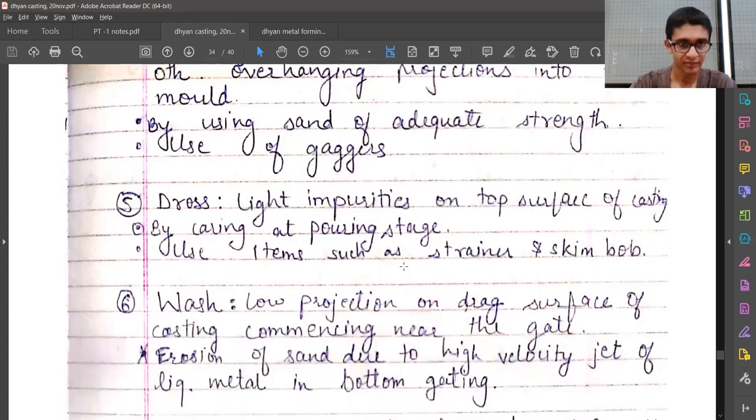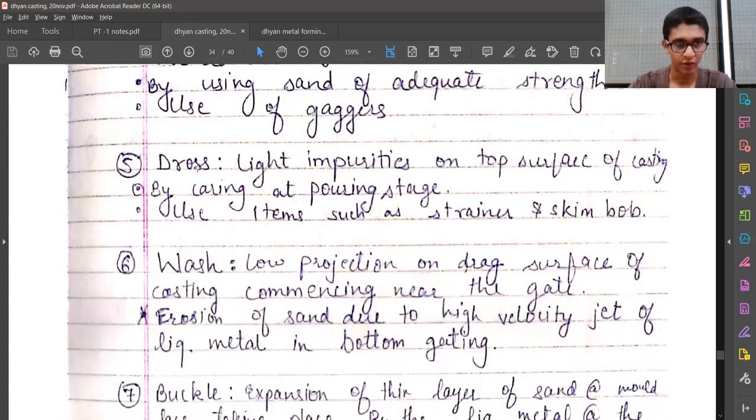The fifth is dross—light impurities on top surface of casting. Very simple thing. It can be remedied by caring at pouring stage when we are pouring the metal, and the second option is use of items such as strainers and skim bob.